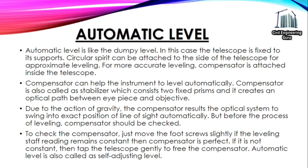The automatic level is similar to the dumpy level with the telescope fixed to its supports. A circular spirit level can be attached to the side of the telescope for approximate leveling. For more accurate leveling, a compensator is attached inside the telescope which levels the instrument automatically. The compensator, also called a stabilizer, consists of two fixed prisms and creates an optical path between the eyepiece and objective using gravity, swinging the optical system into the exact line of sight. To check the compensator, move the foot screw slightly — if the staff reading remains constant, the compensator is working; if not, tap the telescope gently to free it. The automatic level is also called a self-adjusting level.